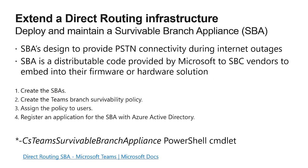We move into deploying and maintaining a Survivable Branch Appliance (SBA). The SBA provides survivability: if an internet outage occurs and Teams is no longer reachable, it still provides basic PSTN call connectivity inbound and outbound for users. SBC vendors provide the SBA capability in their firmware or hardware solutions. Review how to create the SBA, create the policy for it, assign it to users, and what's unique — registering it as an application in Azure Active Directory. Also review the PowerShell cmdlets for those tasks.